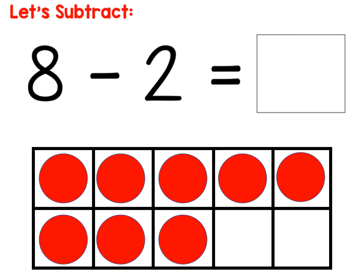Alright, eight minus two. So we always start out with that first number, our minuend. We should have eight. Let's count and make sure we have eight: one, two, three, four, five, six, seven, eight. Okay, we have eight now. Minus two.